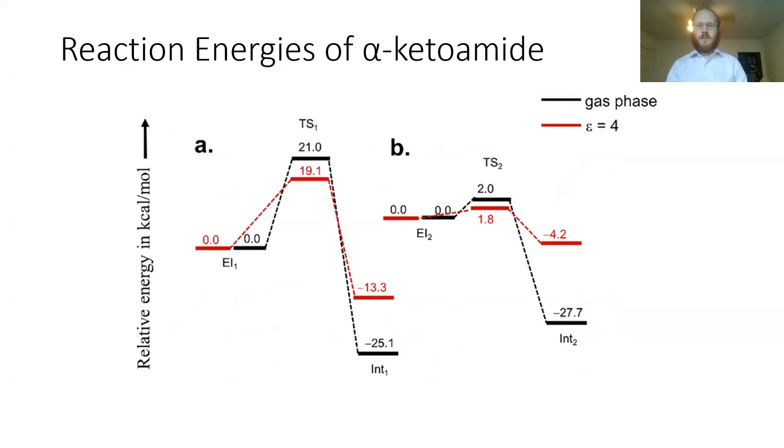What they found in both the gas phase (the black line) and epsilon equals four (a more protein-like environment), they found that both had these exothermal reaction pathways, which is good because that's what we want with an inhibitor. We don't want it to have a higher energy than its initial relative energy, because then it would be more likely to have enough energy to break the bonds and unbind itself from the enzyme, and our inhibition wouldn't work.